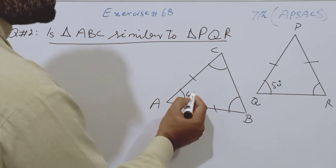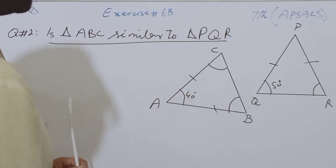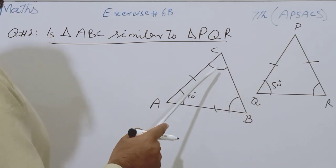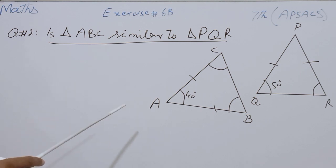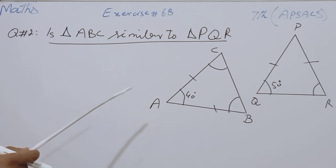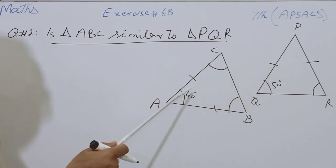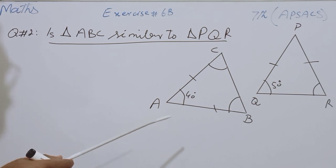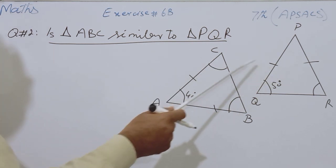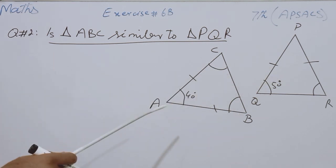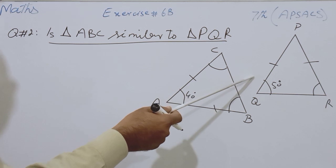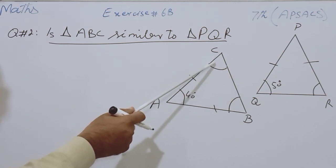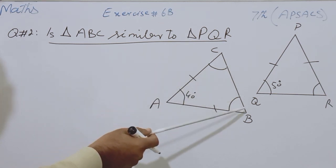First we will discuss both triangles and find the values of the angles, then we will compare the corresponding angles. If corresponding angles are congruent, then the triangles will be similar; if not, then the triangles will not be similar. So first we will find the values of the unknown angles.